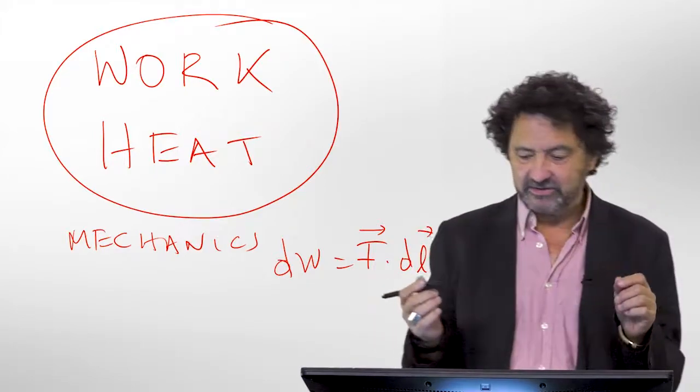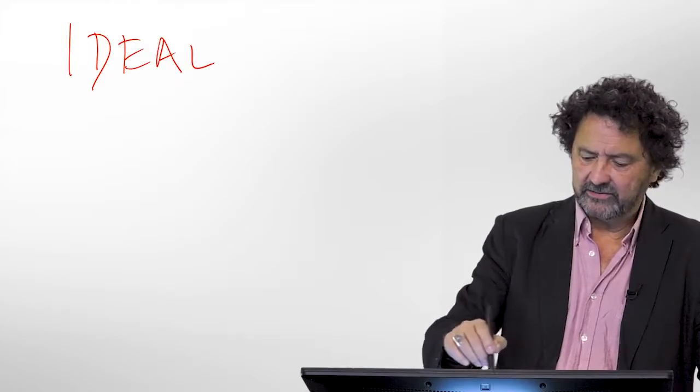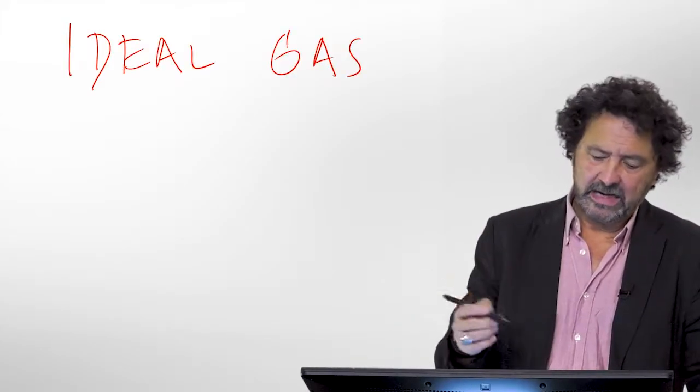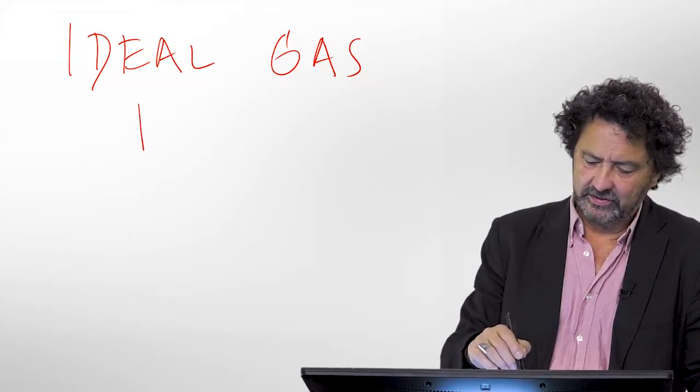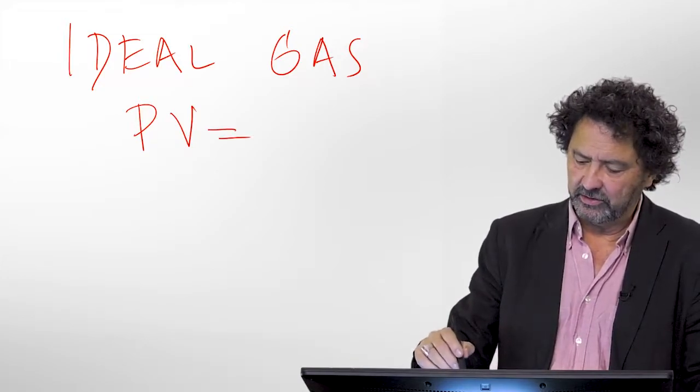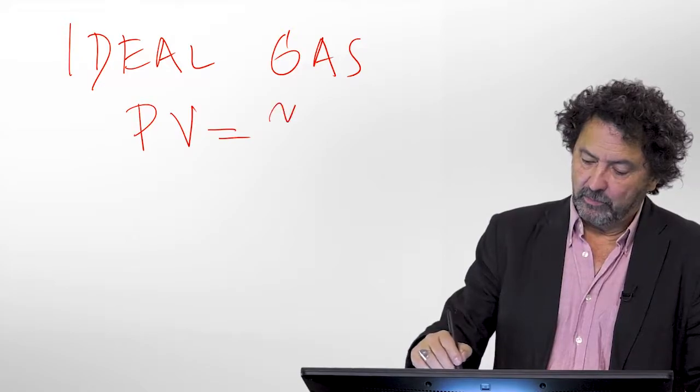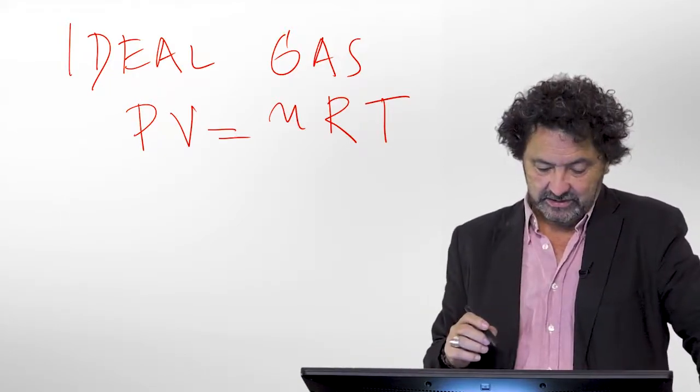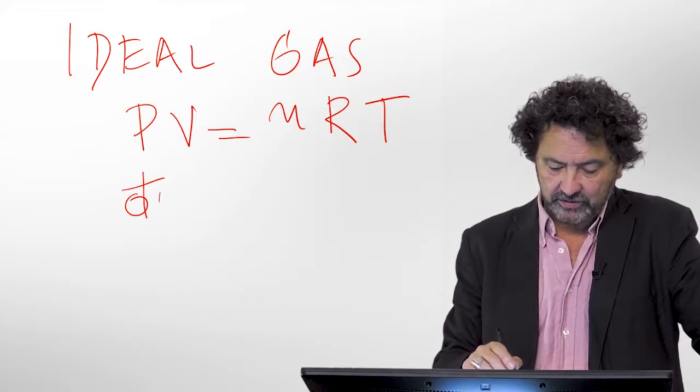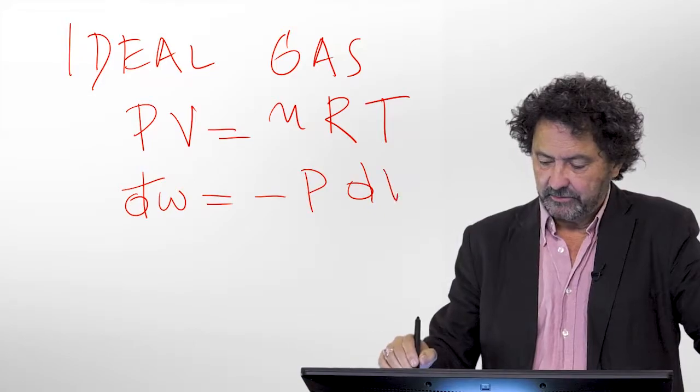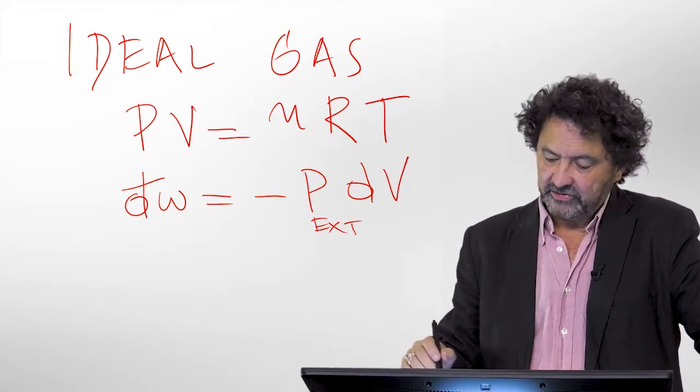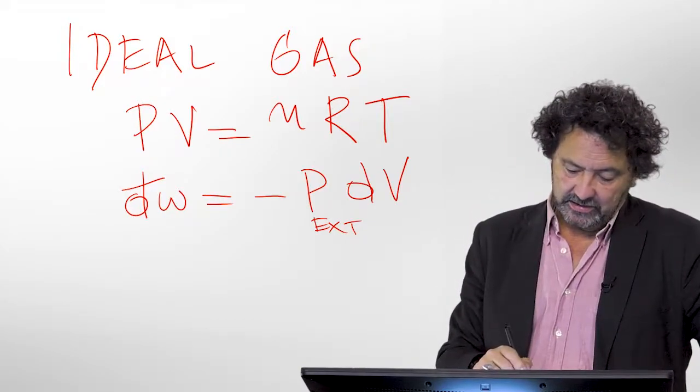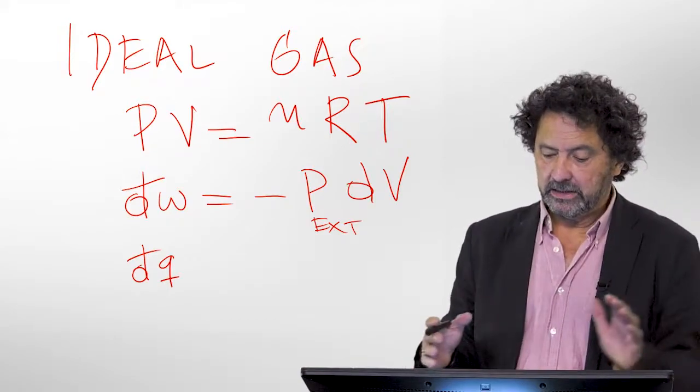This is the first law of thermodynamics. Now, the simplest expression so that we understand: let's say that we have an ideal gas. Ideal gas is defined as a system where this equation is satisfied, that the pressure times the volume equals the number of moles times the gas constant times T. So if we are dealing with a system like this, then the only type of work we need to be concerned with is minus PDV. This is the external pressure. And of course, we have the heat exchange part.